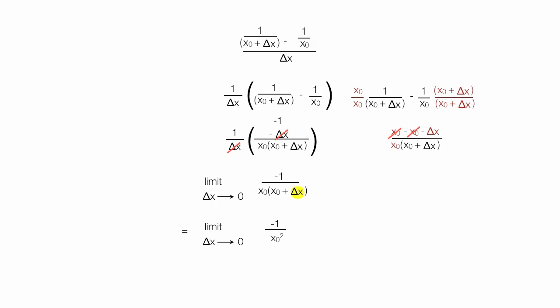As delta x goes to 0, that's going to be 0, so x0 times delta x is nothing, it's 0, so I can ignore that. I'll write this as f prime of x is equal to negative 1 over x0 squared. And this is the derivative.